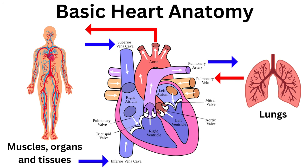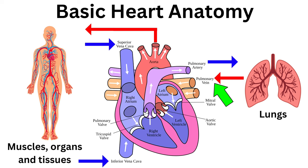Let's start with some basic heart anatomy so you can begin to understand the function of the four valves inside the heart. We will start with the blood in the lungs. Here it picks up oxygen and transports it to the heart via the pulmonary vein, where it enters the left atrium.